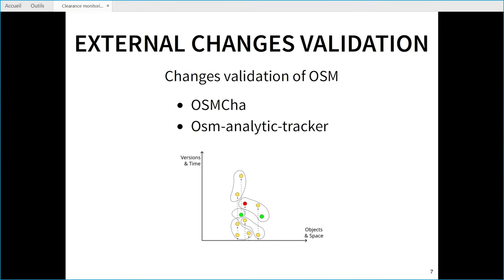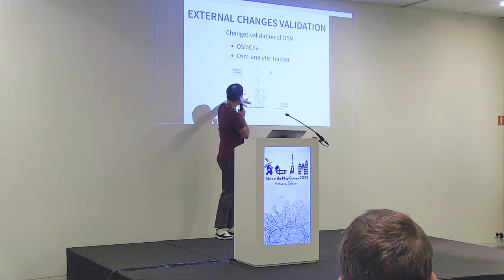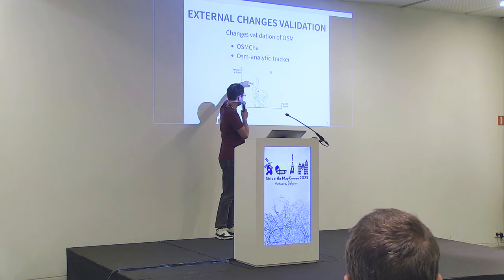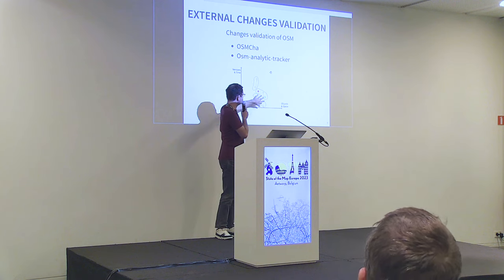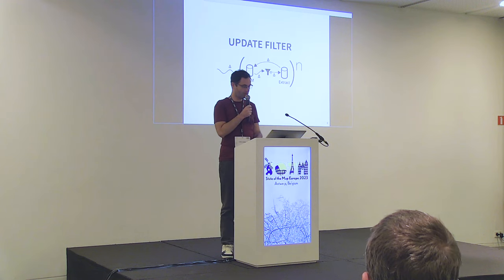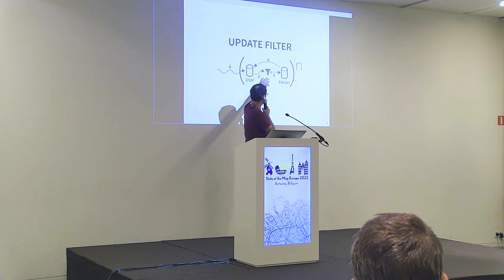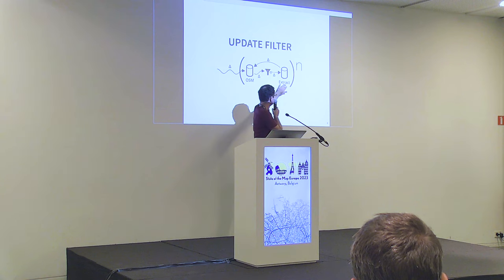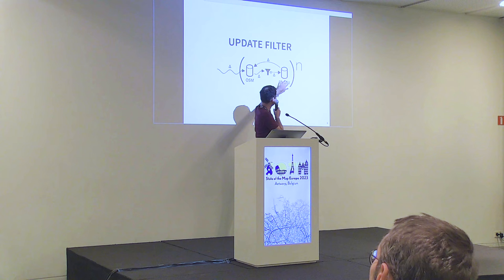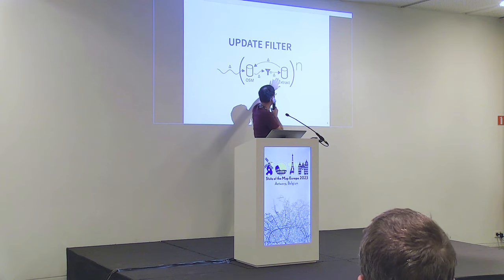For validation of changes, there are already tools like OSM Char and others. The idea is to look at the changeset. A changeset contains many changes to objects, and the changes are not at a single point in time — a changeset may span longer periods. You may change and then change again in the same changeset. So it's not a simple ordered list of changes, and you may be validating a partial changeset.